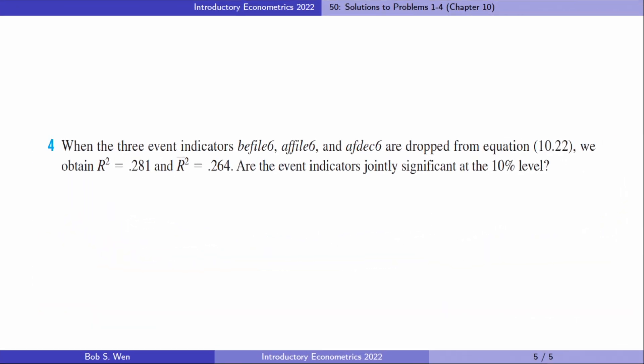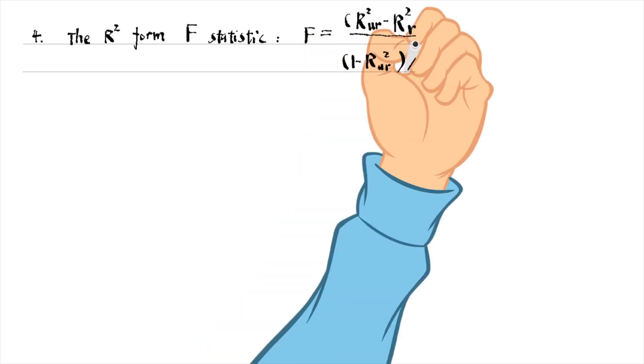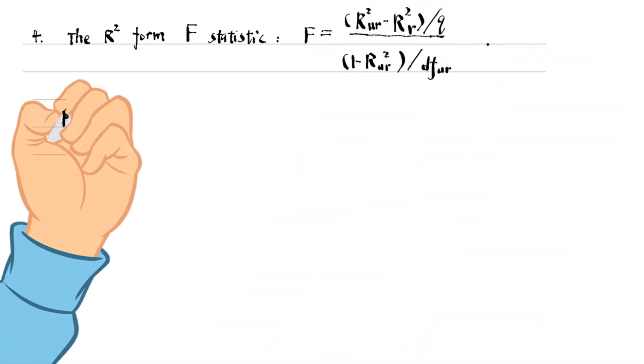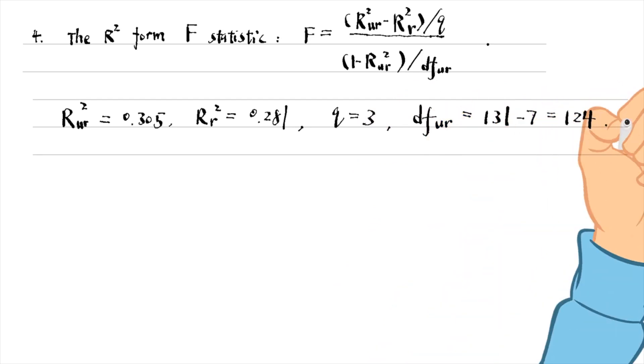For the fourth problem, we use the R-squared form F-statistic. The restricted model is the model where the three event indicators are all set to zero. There were three restrictions.